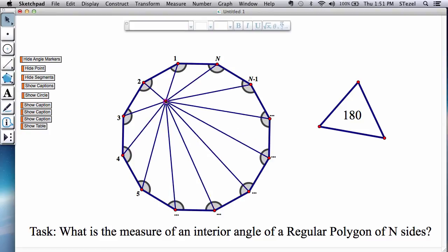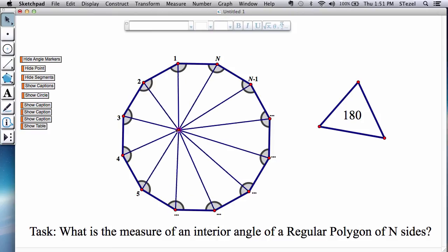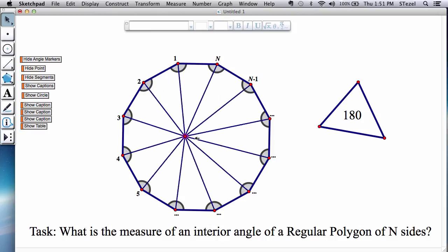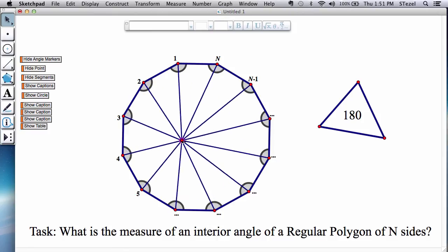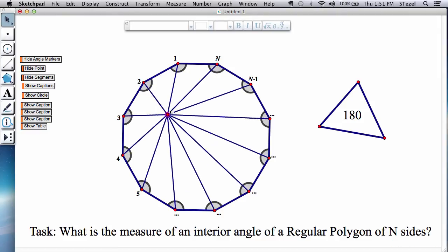And observe the triangles we create this way do not have to be special in any way. All they have to have in common is that they have this point as their common vertex.